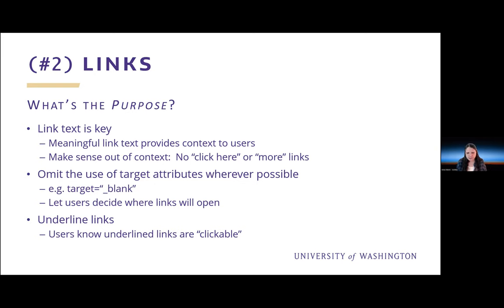When it comes to following links, omit the use of target attributes wherever possible. Target attributes control where links will open, such as target equals underscore blank, which forces the link to open in a new tab. While this is useful for some folks, it's not for everyone. It can become a bad user experience when a user may not know a new tab is opened and then finds it difficult to get back because the back button doesn't work — the history doesn't follow users into a new tab.